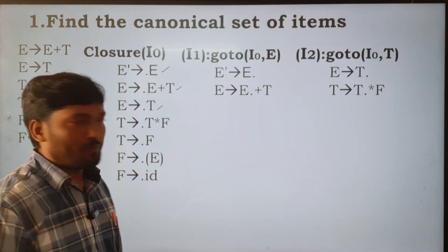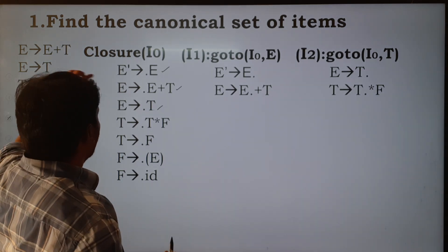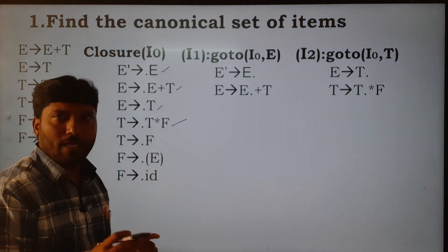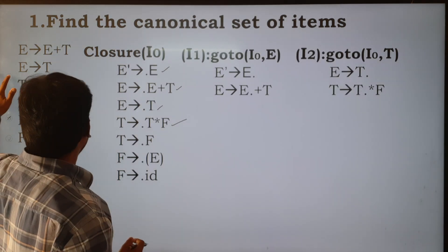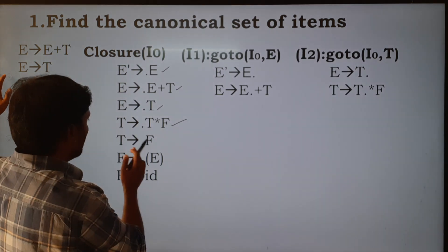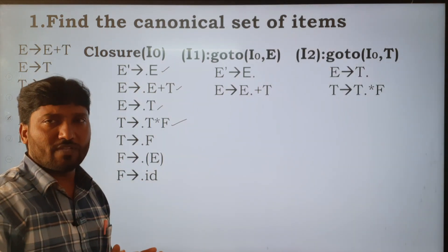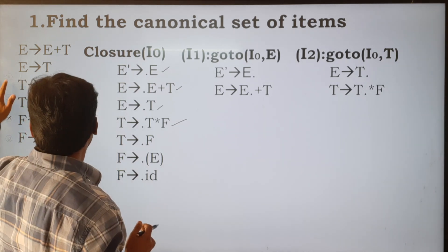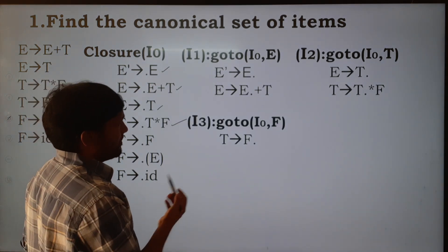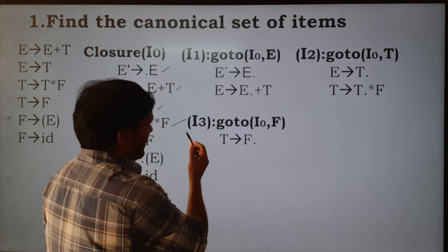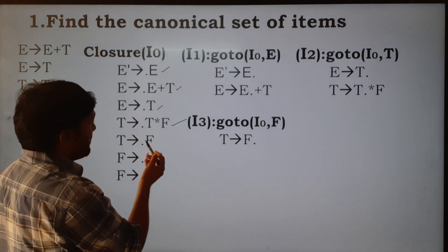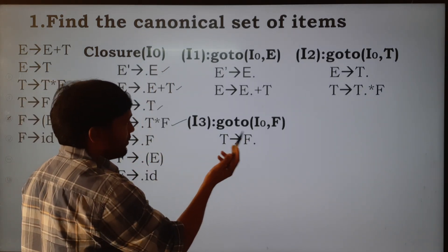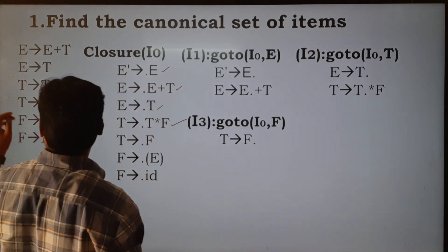T is over; next we apply the goto function for capital F. If we apply goto for capital F, we shift the dot symbol one position to the right. This is item I3 — goto(I0, F) — the dot symbol is moved one position to the right.